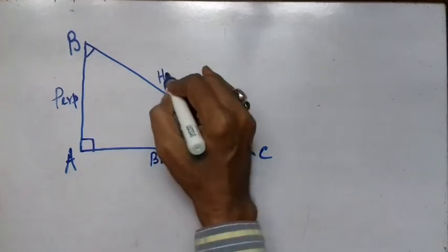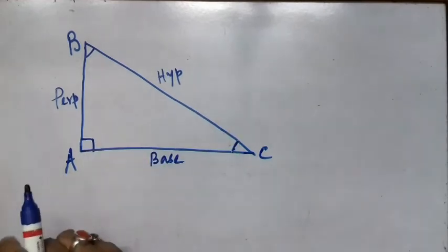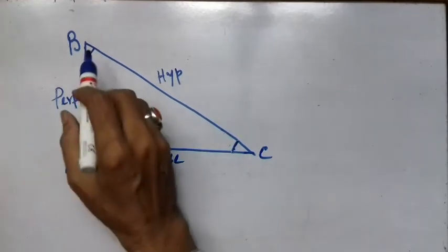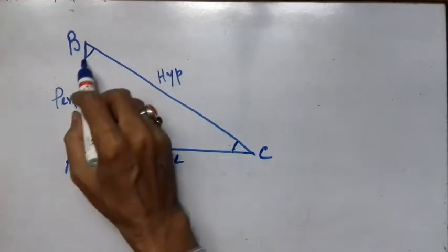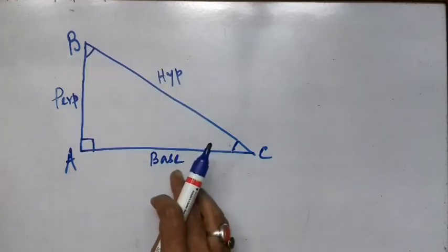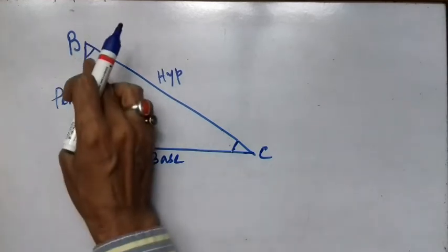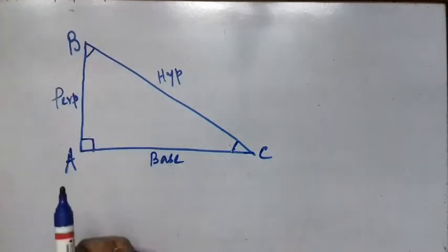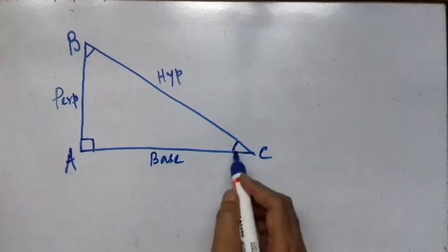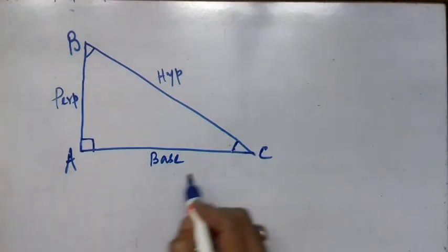These three — perpendicular, base, and hypotenuse — are the names of the sides. If the concerned angle changes, the base and perpendicular switch accordingly: the side adjacent to the new concerned angle becomes the base, and the side opposite to it becomes the perpendicular.